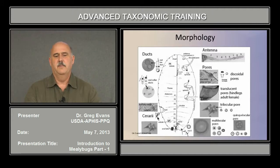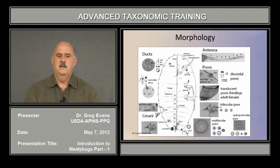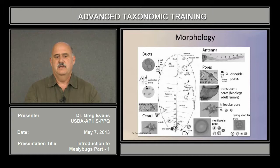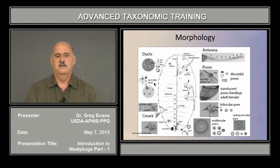Cerarii are very important in distinguishing genera. Whether they're only on the abdomen or go all the way up the thorax and head is an important character. Also important are the two main kinds of ducts: oral rim ducts, which are sclerotized tubes with a washer-like rim around them, and oral collar ducts, which are just the orifice and tube without the rim. Oral rim ducts are very important in distinguishing genera, and their distribution is important in distinguishing certain species.